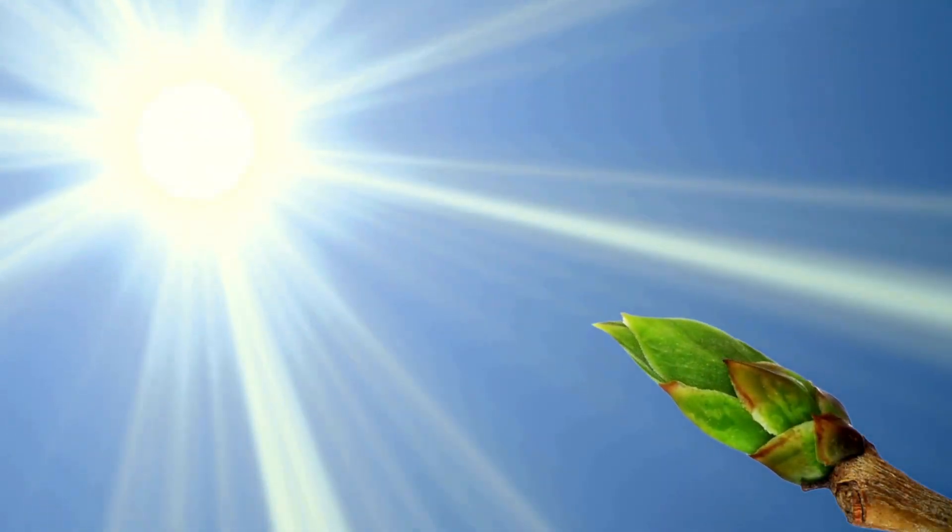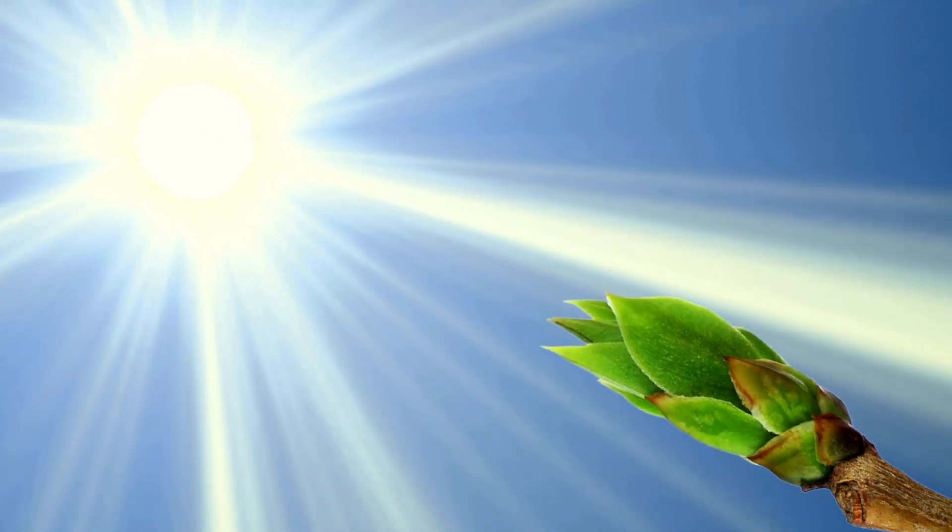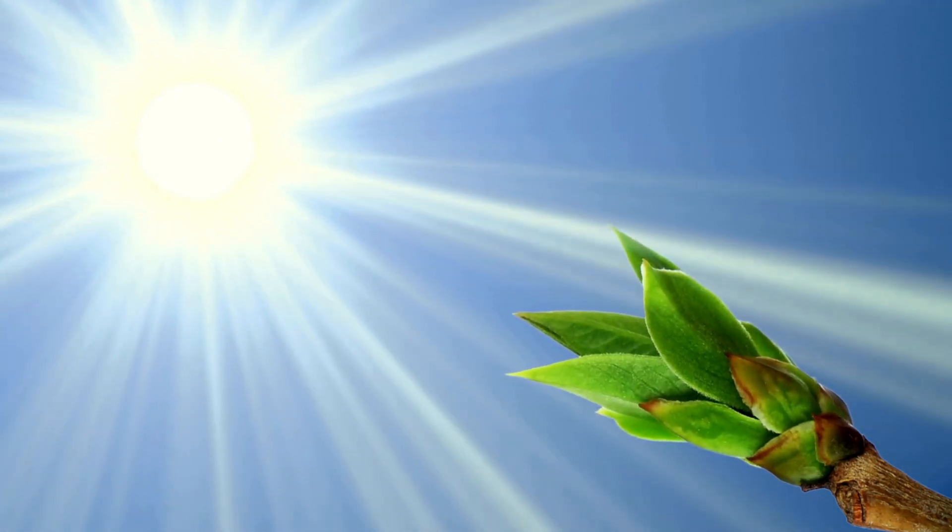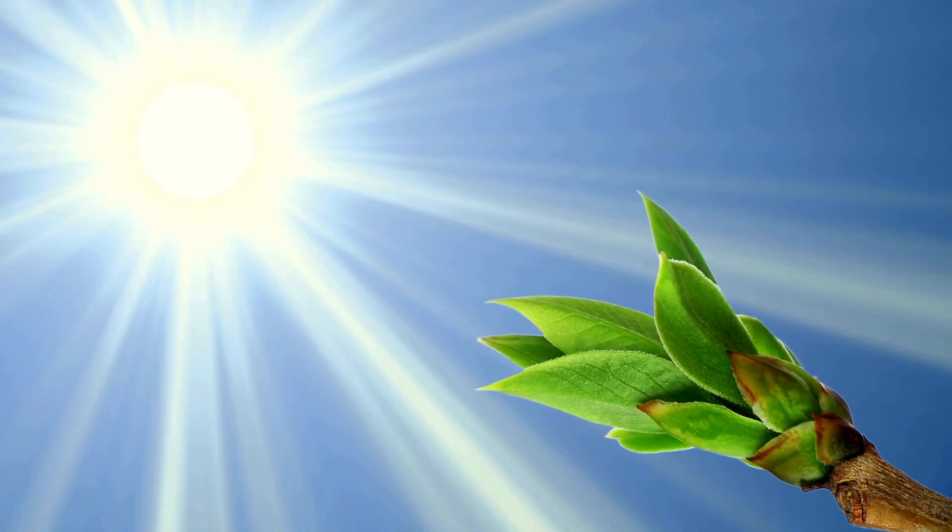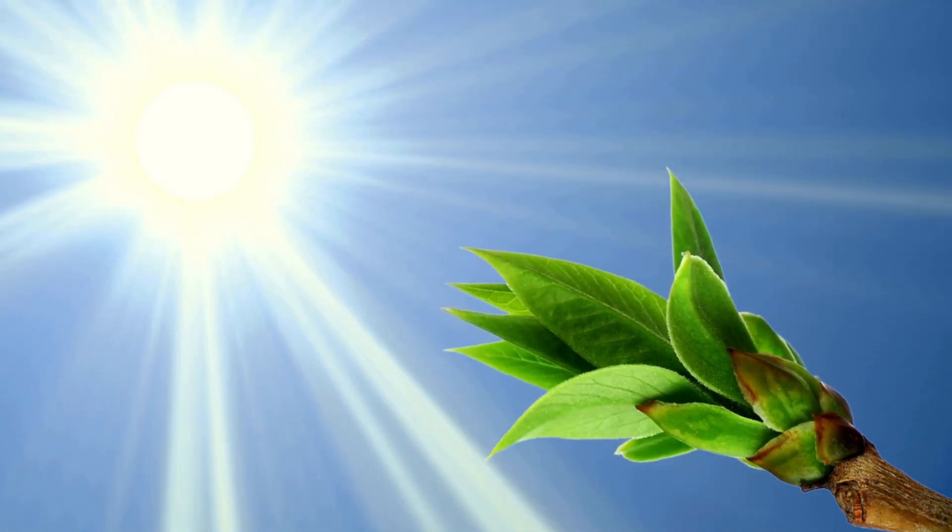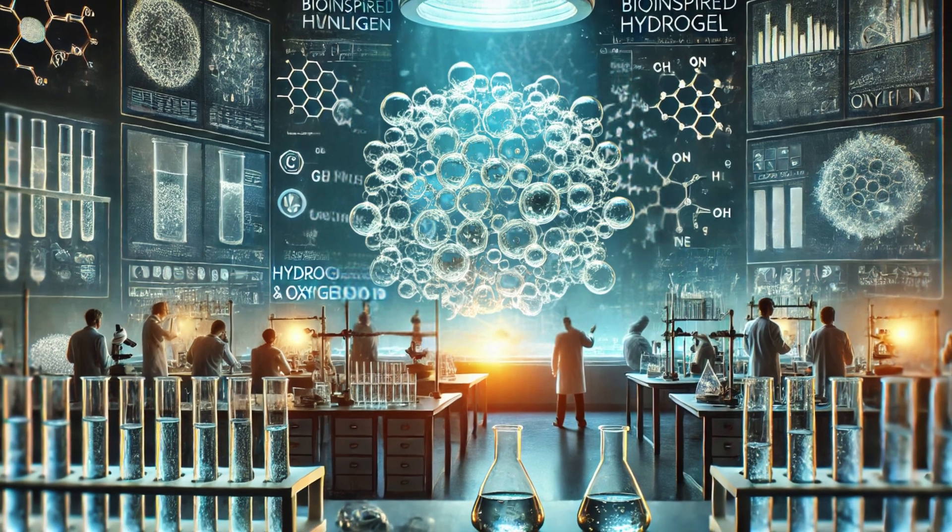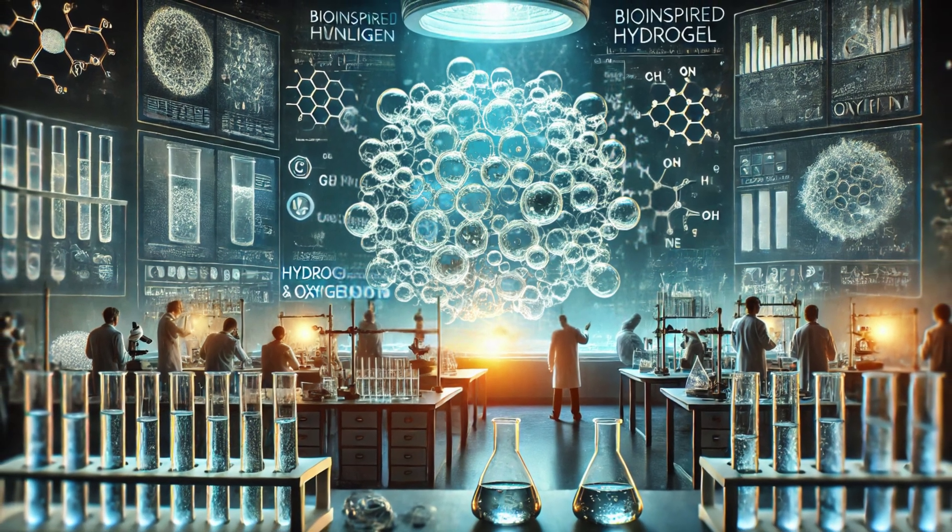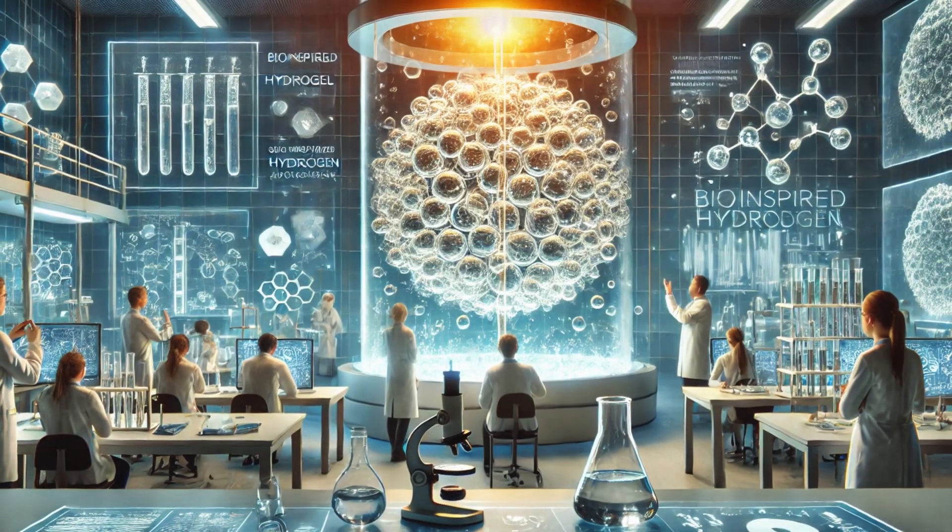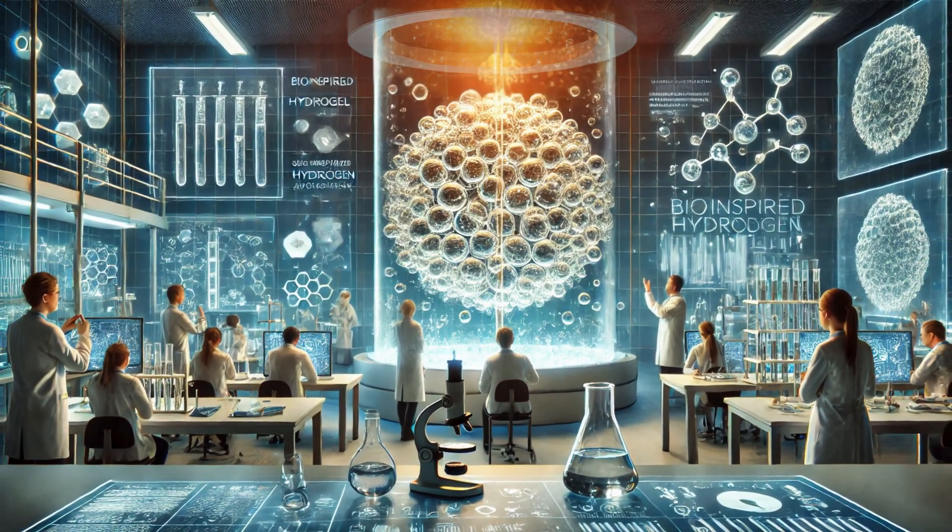Imagine harnessing sunlight as seamlessly as plants do, turning it into clean energy. That dream might be closer to reality, thanks to a revolutionary leap in artificial photosynthesis. Scientists at Japan Advanced Institute of Science and Technology and the University of Tokyo have developed a bio-inspired hydrogel. This gel uses sunlight to split water into hydrogen and oxygen, no extra energy needed.